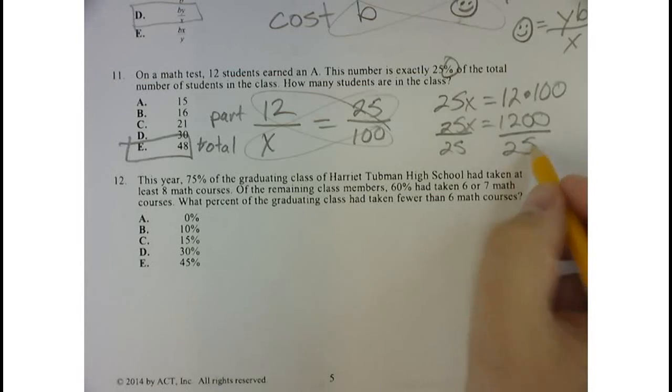Because 4 times 25 is 100, and then you multiply that by 12, so 4 times 12 is 48.